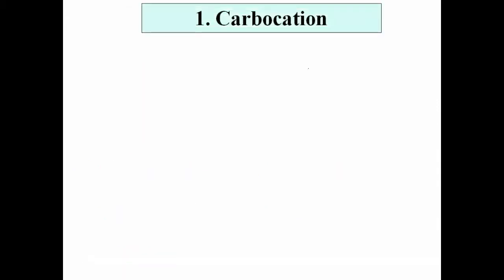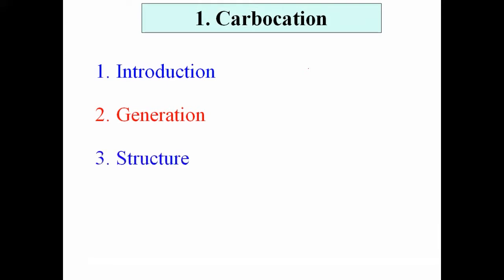Let us start with the first one — carbocation. We are going to discuss carbocation in detail in five steps: first, introduction; second, generation, meaning how the carbocation is generated during organic reactions; third, structure, meaning the hybridization of the central carbon, its geometry, and bond angle; fourth, stability, discussing comparative stability of carbocations; and lastly, reactivity, studying examples of organic reactions which involve formation of carbocation as an intermediate.